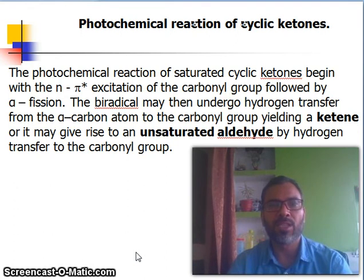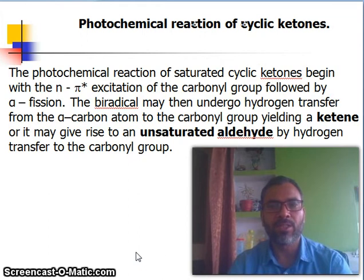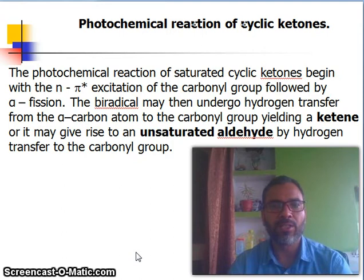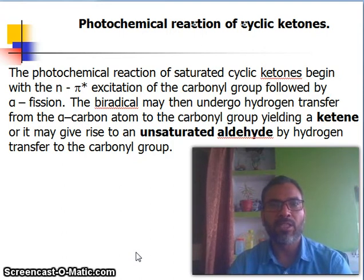Previously I already discussed about Norrish type 1 and Norrish type 2 reactions concerning alpha ketones and gamma ketones. So let us start about the photochemical reaction of cyclic ketones. The photochemical reaction of saturated cyclic ketones begins with the n→π* excitation of the carbonyl group followed by alpha cleavage.